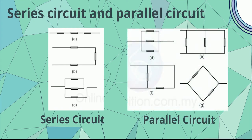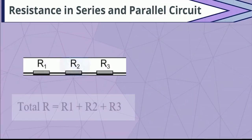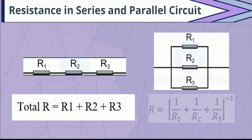Resistors connected in one non-branched wire are said to be connected in series, whereas resistors connected in a branched wire are said to be connected in parallel. In a series circuit, the effective resistance is equal to the sum of the individual resistances. In a parallel circuit, the effective resistance of the resistors can be calculated from the following equation.